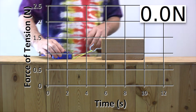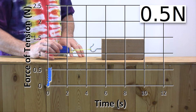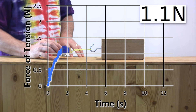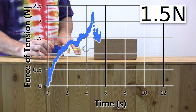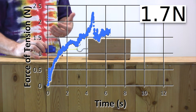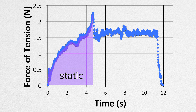Let's watch that one more time and carefully note when the block starts to move. It starts to move right now. Let's take a closer look at that graph. You can see the first part is all static friction when the block is stationary and the force of tension equals the force of static friction.